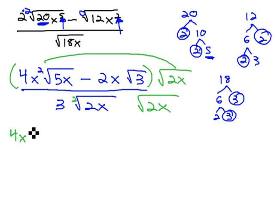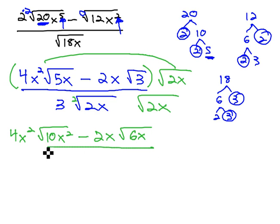4x squared outside is unchanged, square root of 5 times 2 is 10, x squared, minus 2x outside unchanged, under the square root is 6x, over, there's a 3 outside the radical. A pair of 2's pulls a single 2 outside of the radical, and a pair of x's pulls a single x outside the radical, and nothing is left inside the radical.